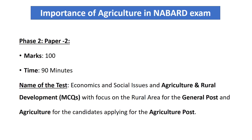As part of Phase 2, there is a Paper 2 for 100 marks that covers economics and social issues plus agriculture and rural development. This is an MCQ paper, and we need to focus on agriculture and rural development because it constitutes 50% of the paper. For students applying for specialist posts, this paper would consist solely of agriculture.